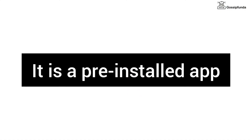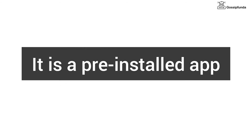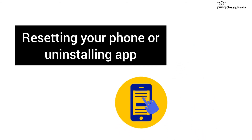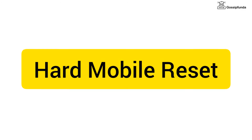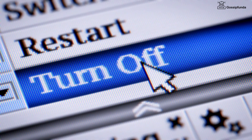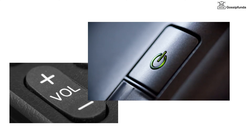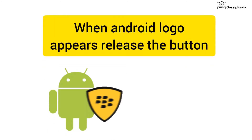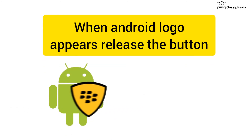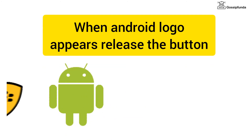Since it is a pre-installed application, fixing it includes methods like resetting your phone or uninstalling the application. For a hard mobile reset: first, turn off your Android. Then press the power and volume up key together and long press these keys. Once the Android logo appears on the screen, release the button.